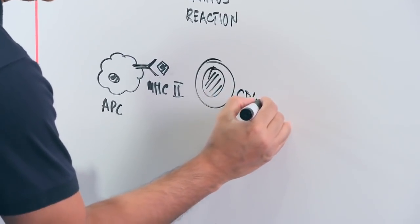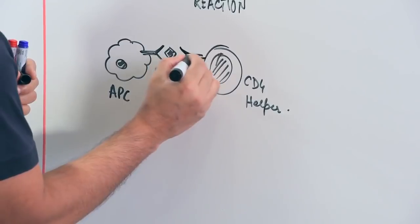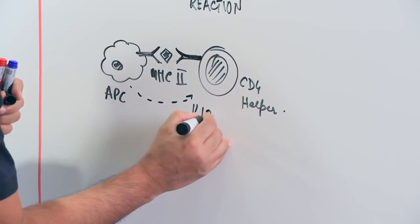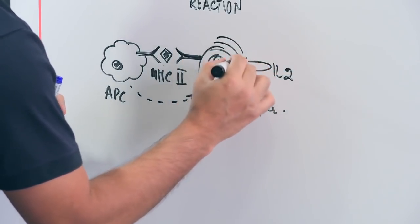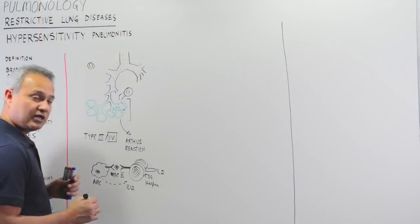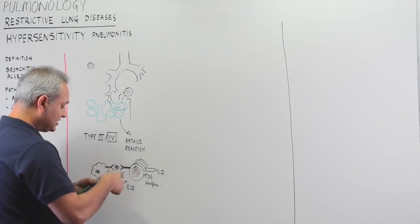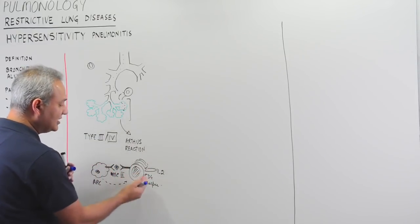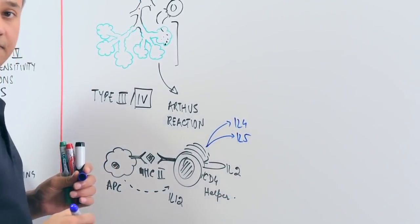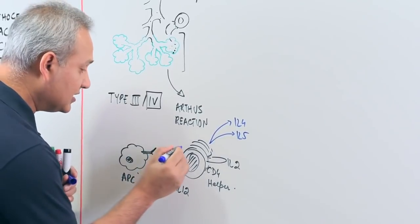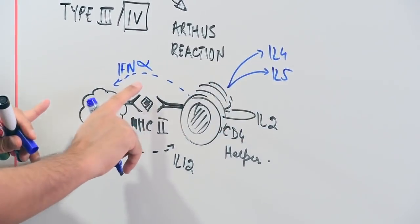Here is a CD4 helper T cell presented with MHC2 via its T cell receptor. The macrophage releases IL-12, which activates the T cell. The T cell then releases IL-2, causing T cell proliferation — many T cells are generated. These T cells run back to the site of the allergy. Depending on which lineage becomes active, IL-4, IL-5, or interferon gamma is released.